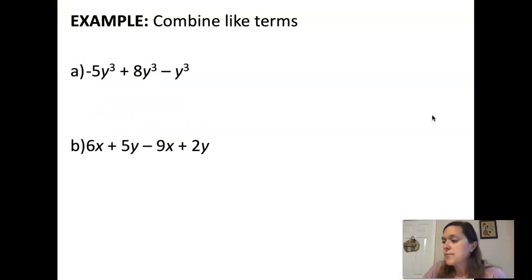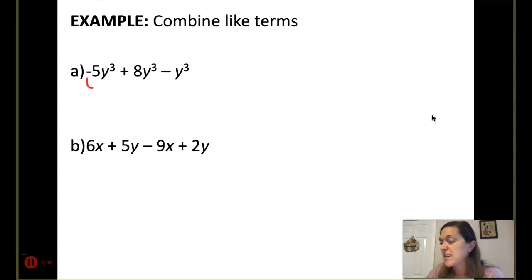Here we're going to combine like terms. I've got all degrees of three. So negative 5y cubed plus 8y cubed would be 3y cubed. 3y cubed minus another y cubed would give me 2y cubed. If we had to classify that, that would be a cubic monomial.